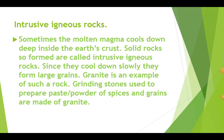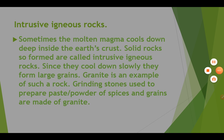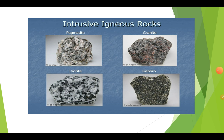With intrusive igneous rocks, sometimes the molten magma cools down deep inside the earth's crust. The solid rocks so formed are called intrusive igneous rocks. Here I have some photographs for your information — some examples of intrusive igneous rocks: pegmatite, granite, diorite, and gabbro. All these are examples of intrusive igneous rocks.